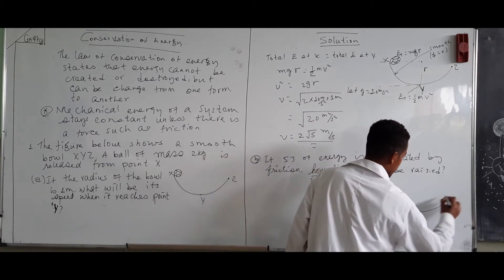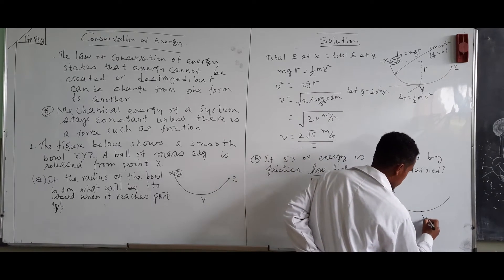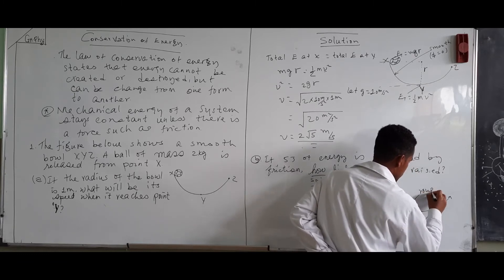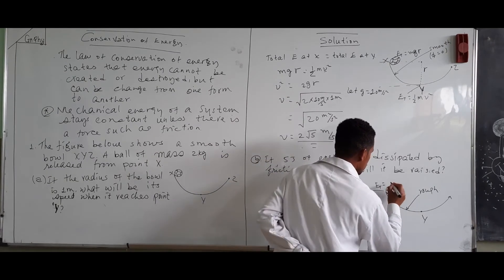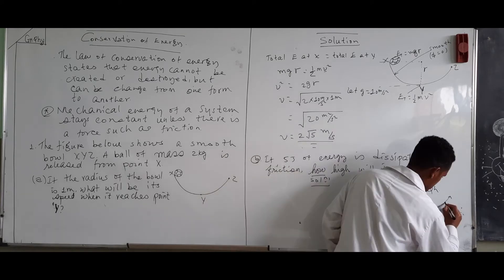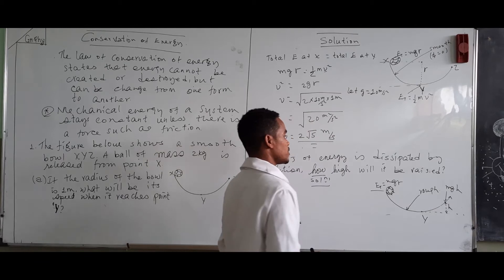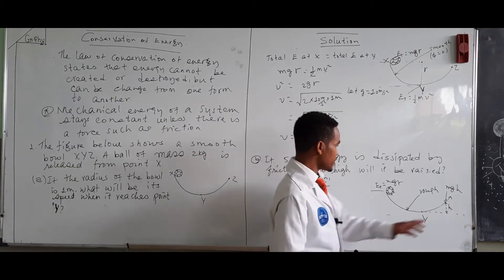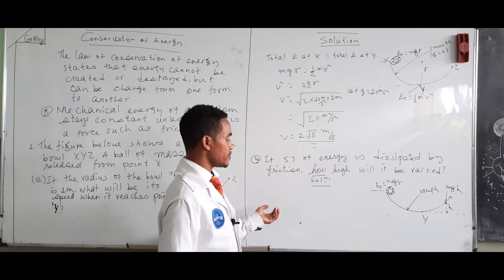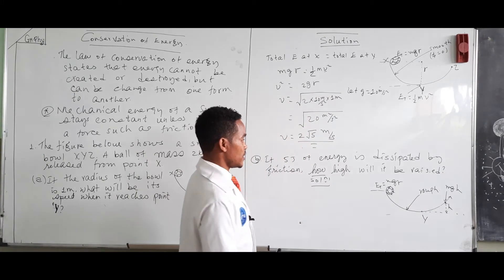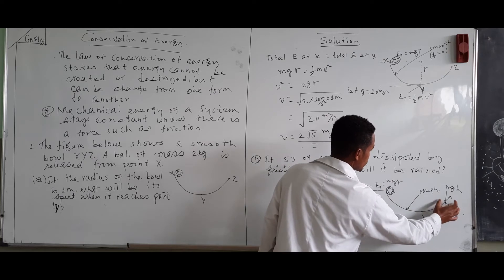Now the surface is rough. Total energy at the top is MgR. Assuming the new height is H, the energy at that point will be MgH. But the energy at this point is not equal to the energy at the other point, because some energy is dissipated due to friction — the roughness of the surface. Some energy is dissipated and only reduced energy remains.